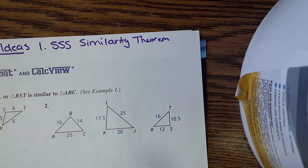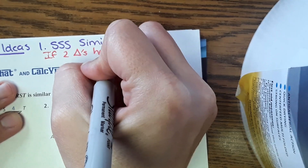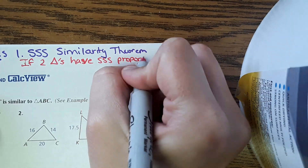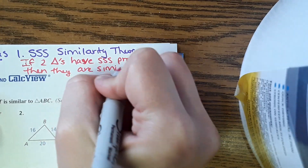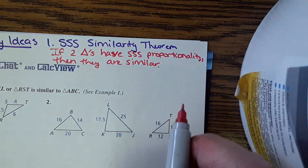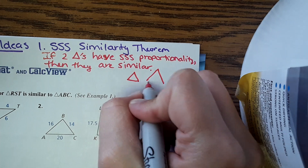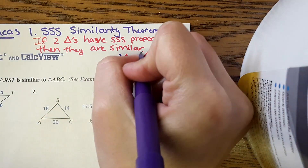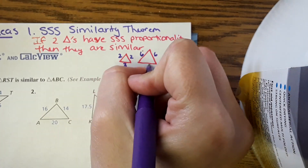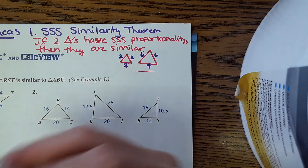What that means is if two triangles have side-side-side proportionality, then they are similar. For example, a triangle here and a triangle here. Let's say this is 2, and this is 6; this is 2, and this is 6; and this is 3, and this is 9. These should be related through multiplication or division. 2 times 3 is 6, 2 times 3 is 6, and 3 times 3 is 9 — so these triangles are similar.